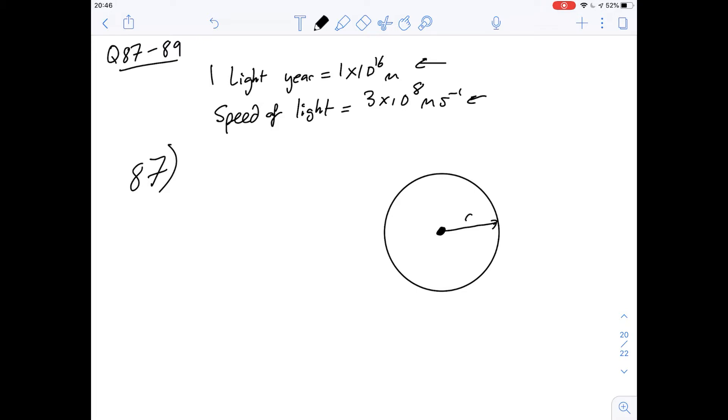87 says which of the following is closest to the diameter of the radio bubble. So I've drawn a bit of a diagram here and we can assume that this point in the centre is just going to be the centre of the earth and then the radius that we've described here is a distance that the signal has travelled in that 100 years.